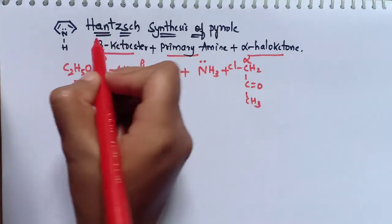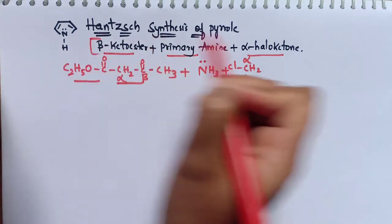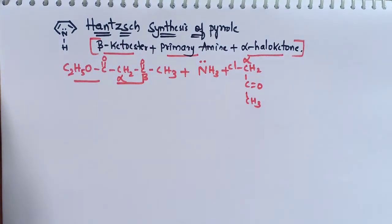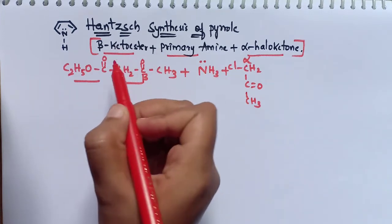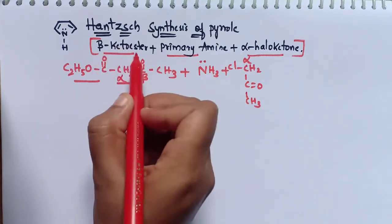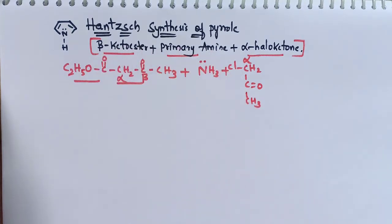In the first step of the mechanism, we use only the beta-keto ester and the primary amine. I will explain this mechanism in the easiest way possible. Please subscribe to our channel if you haven't yet. Now, let's start the mechanism.